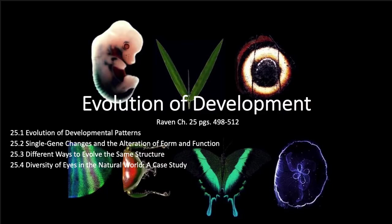This is going to be a lecture on chapter 25, evolution of development, or evo-devo. It's a shorter chapter, but we're going to look at developmental patterns and the evolution of them. We'll look at how single genes have changed to take on different forms or functions in different organisms, how different ways evolve the same structure, and then a case study of the diversity of eyes in the natural world.